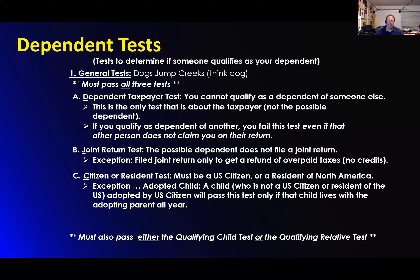I have to find a better mnemonic than 'dogs jump creeks.' So, to determine if someone qualifies as your dependent, there's a dependency test, a joint return test, and a citizen or resident test.